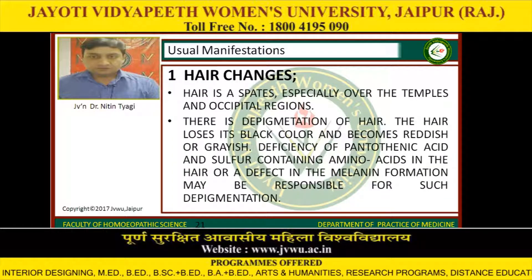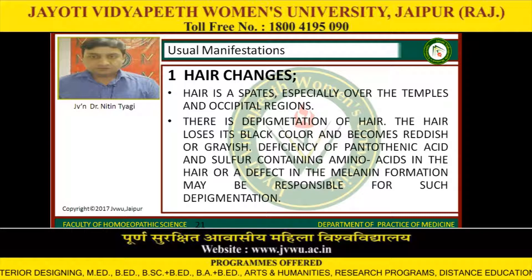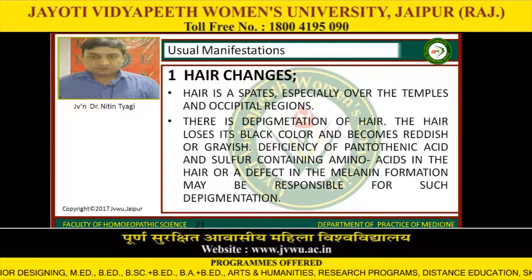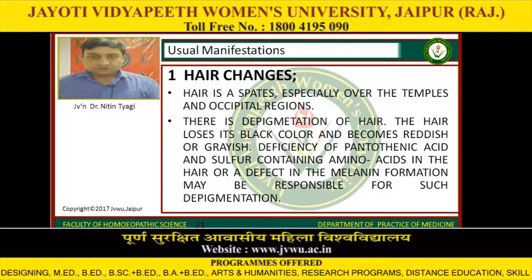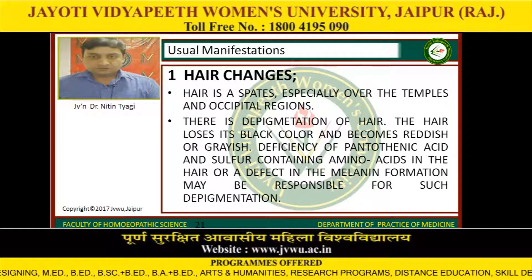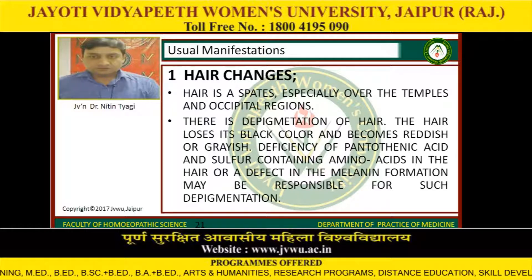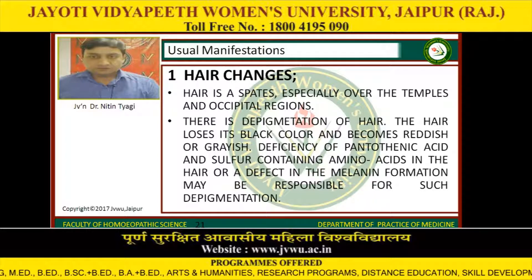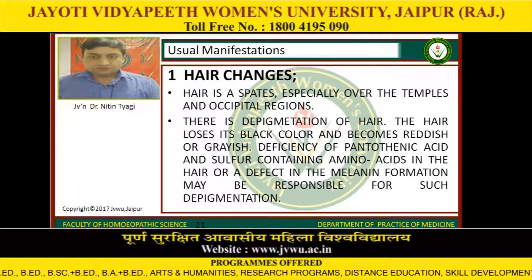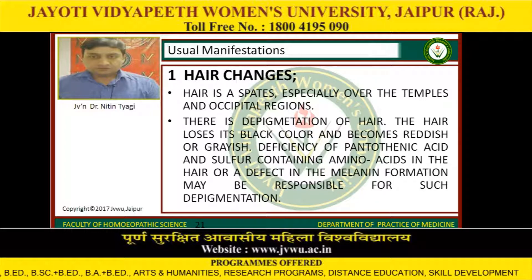Usual manifestations: the first one is hair changes. Hair is sparse, especially over the temples and occipital region. There is depigmentation of hair — the hair loses its black color and becomes reddish or grayish. Deficiency of pantothenic acid and sulfur-containing amino acids in the hair, or a defect in melanin formation, may be responsible for such depigmentation.